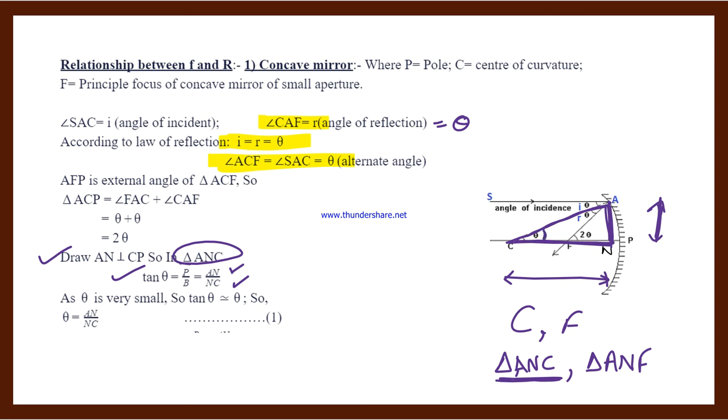So we write tan theta. Tan theta means perpendicular divided by base. So perpendicular is AN, and base is NC. As theta angle is very small, we replace tan theta with theta. So theta equals AN divided by NC. This is our equation number 1.